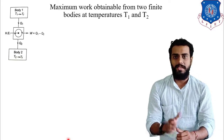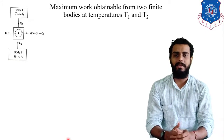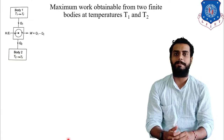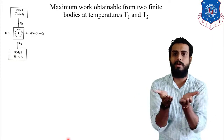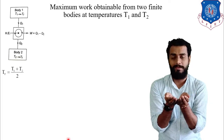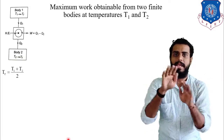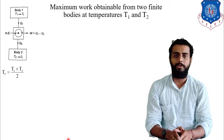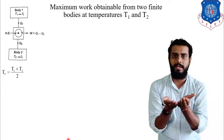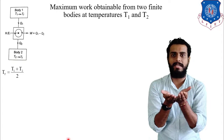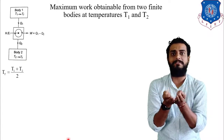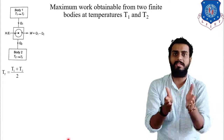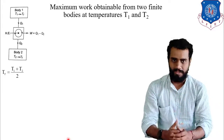The intermediate temperature Tf equals T1 plus T2 divided by 2 when two bodies are simply placed in contact with each other with no engine operating in between. T1 and T2 will attain temperature Tf, which is nothing but their average.